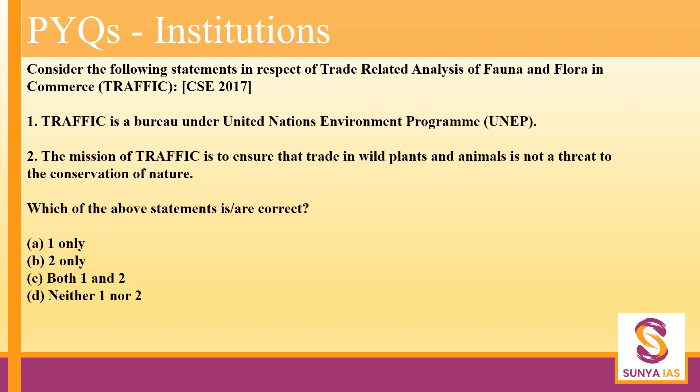Last but not the least, there are many institutions that an aspirant has to read about, and it can get very daunting. For example, in 2017 they asked about TRAFFIC, and there are institutions related to UNEP, Climate Action Network, and various governmental, intergovernmental, and non-governmental organizations. In our institutions chapter, I will quickly summarize all the important institutions in great detail so that you get all such questions right.